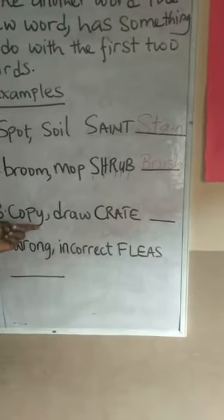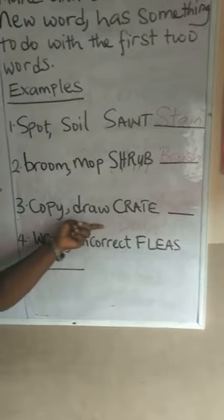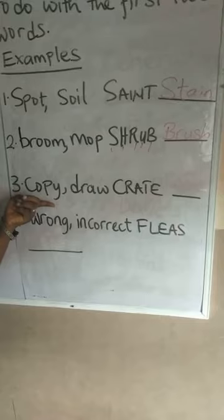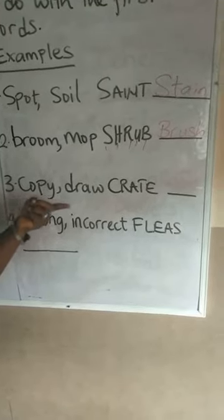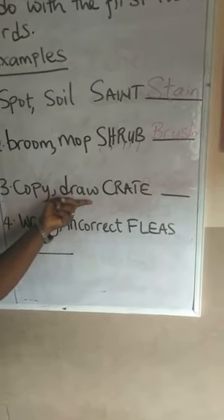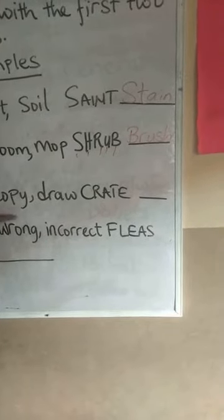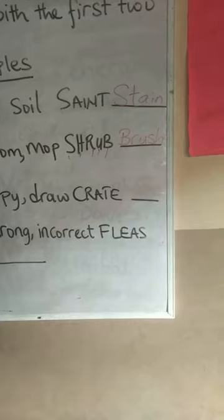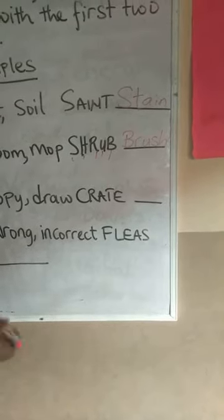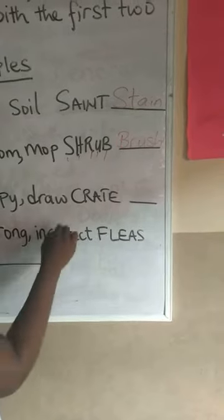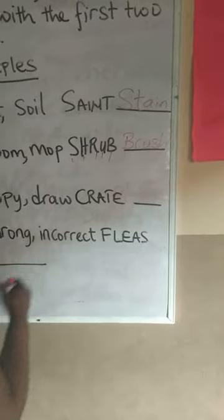We have the words copy and draw. You copy what you see, and you draw what you see or what you imagine in your mind's eye. When you do this, you're actually tracing what you're seeing down on paper. The word we're looking for is trace.